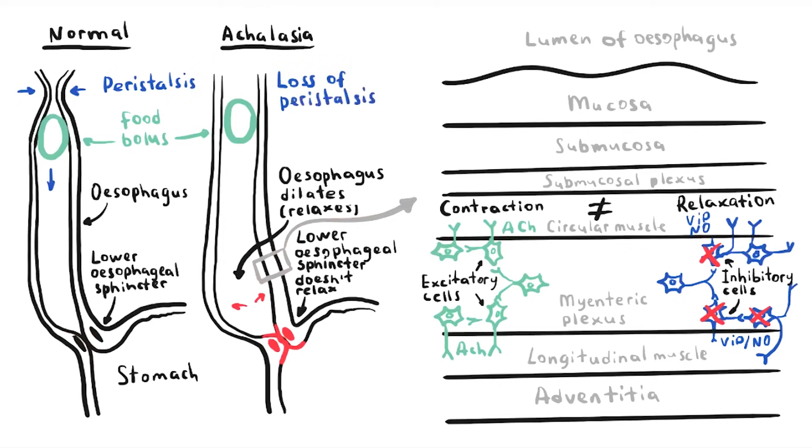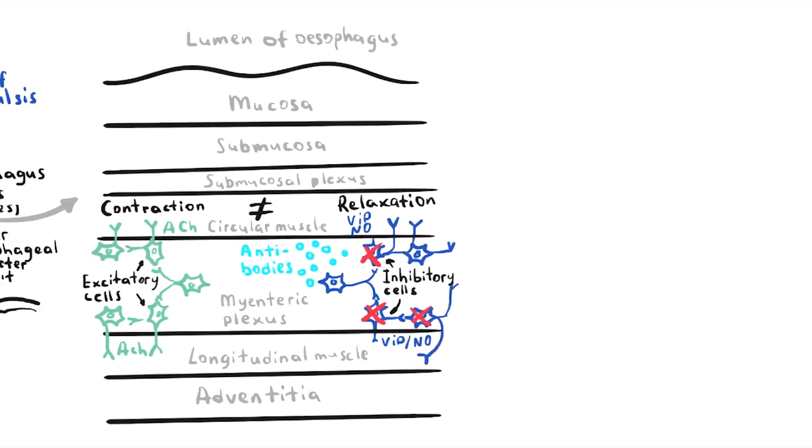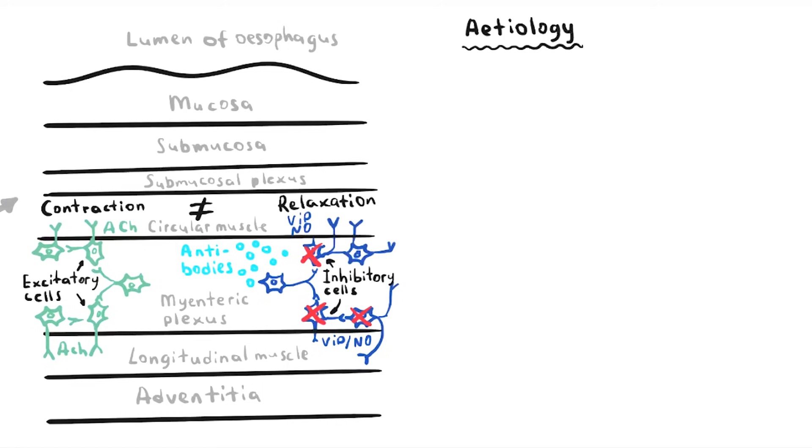Achalasia is also considered to be an autoimmune disorder. Patients with achalasia have been shown to have antibodies to myenteric cells in their circulation. So the exact etiology of achalasia is unknown.